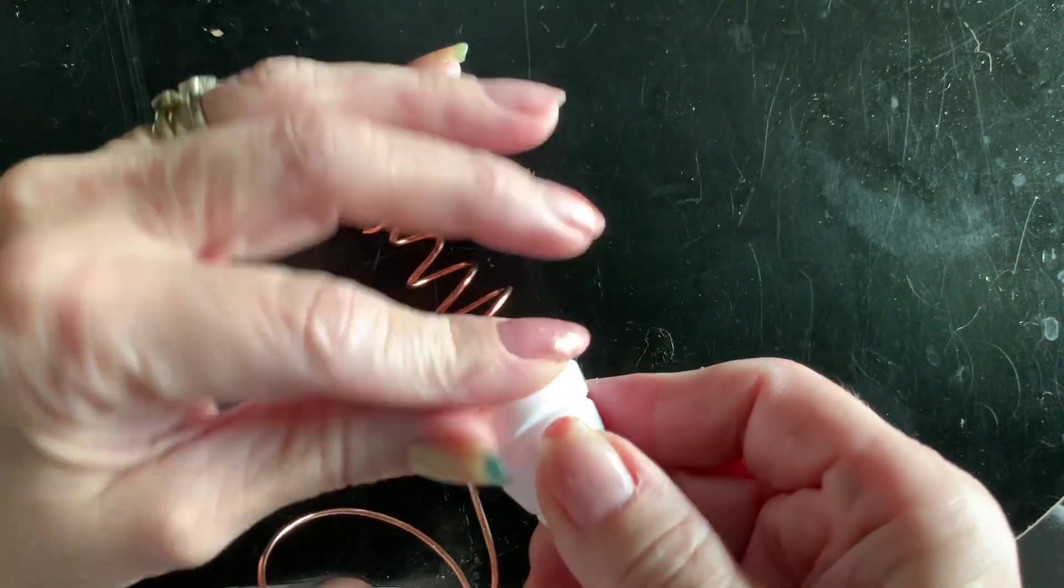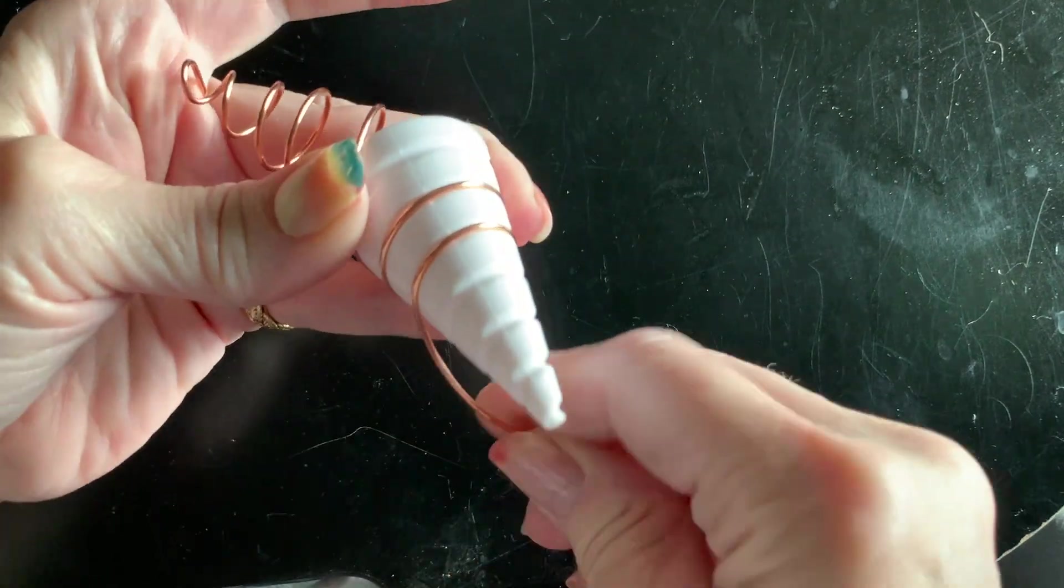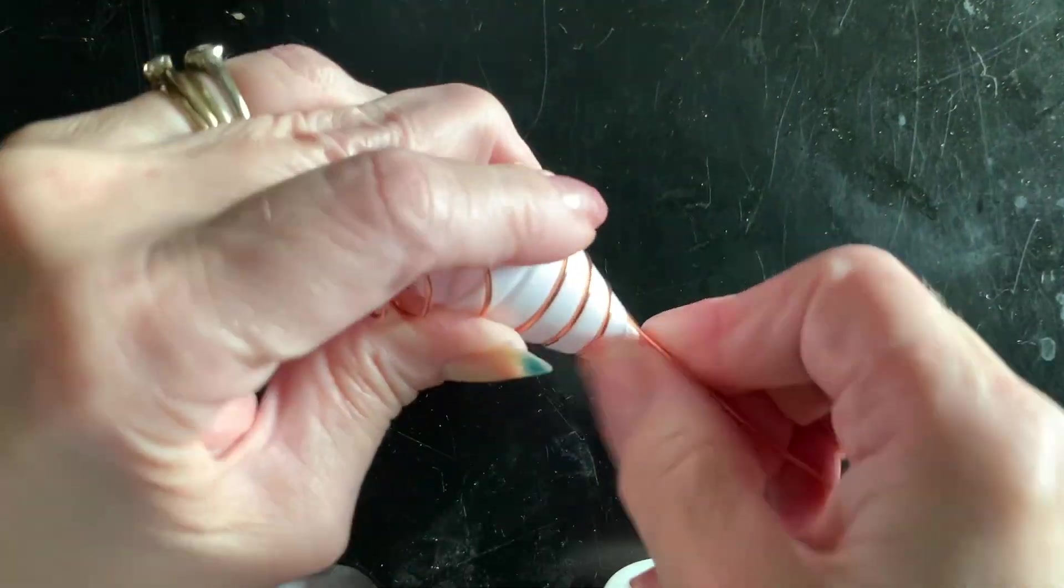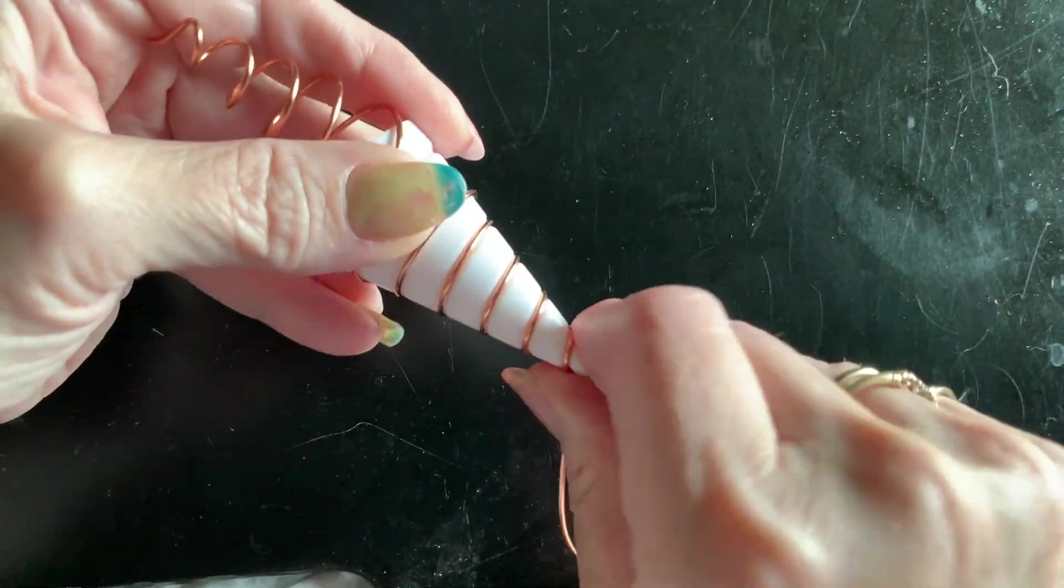I'm using pure bare copper wire and a winding jig that you can buy online, which makes it much easier to make these coils.